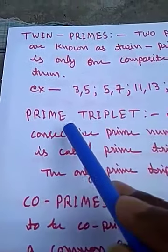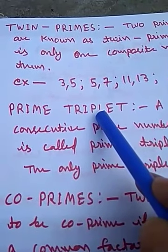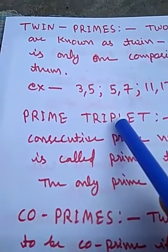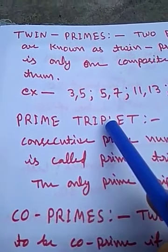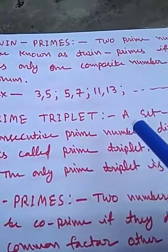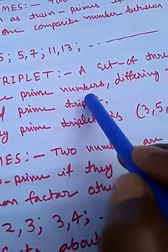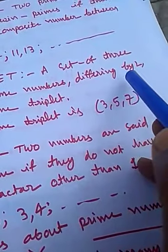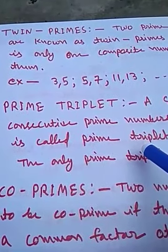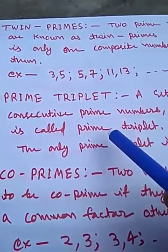A prime triplet means there are three consecutive prime numbers that differ by 2. The difference between each consecutive pair of prime numbers is 2, and there are three prime numbers in the set. A set of three consecutive prime numbers differing by 2 is called a prime triplet.